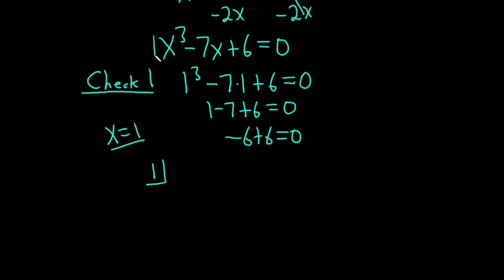Then you write down the coefficients of your polynomial. The first coefficient is 1. The second coefficient is 0, there's really a 0x squared here, it's invisible. So 0. The next one is negative 7, and the next one is 6. Then you draw a line.